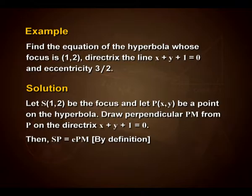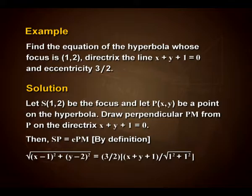Therefore, using the distance formula we can write: √[(x−1)² + (y−2)²] = (3/2) × (x + y + 1)/√(1² + 1²), which on squaring both sides gives (x−1)² + (y−2)² = (9/4) × (x + y + 1)²/2.